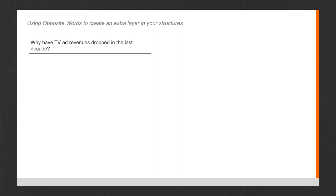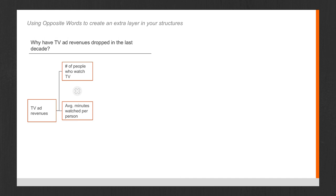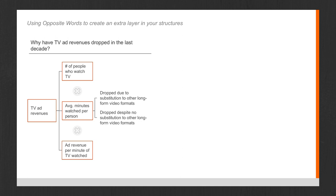The first case is: why have TV ad revenues dropped in the last decade? Using an algebra structure, TV ad revenues can be broken down as the number of people who watch TV, times the average minutes watched per person, times the ad revenue per minute of TV watched. We can create an extra layer using opposite words by breaking down average minutes watched per person: this may have dropped due to substitution to other long-form video formats — like Netflix, YouTube, or Vimeo — or it may have dropped despite no substitution to other long-form video formats.